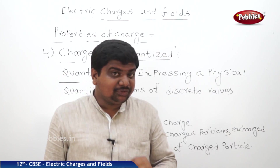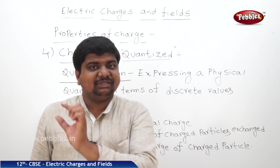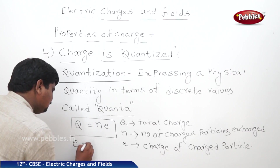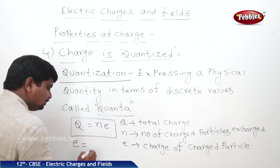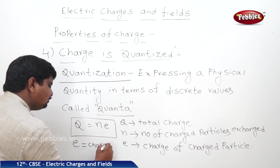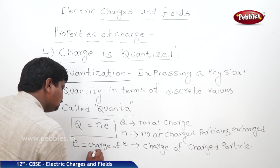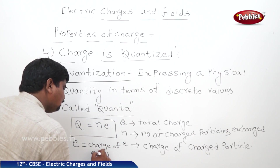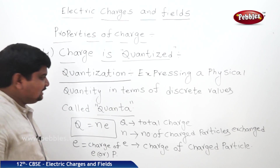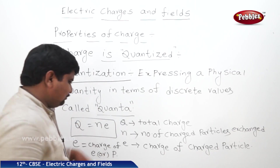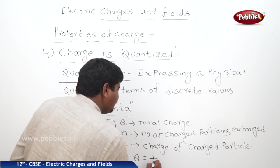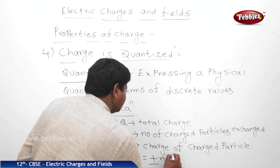What is the charge of neutron? Neutrally charged, that means 0. So E is equal to the charge of electron or proton. That means this Q value can be expressed as Q is equal to plus or minus Ne.